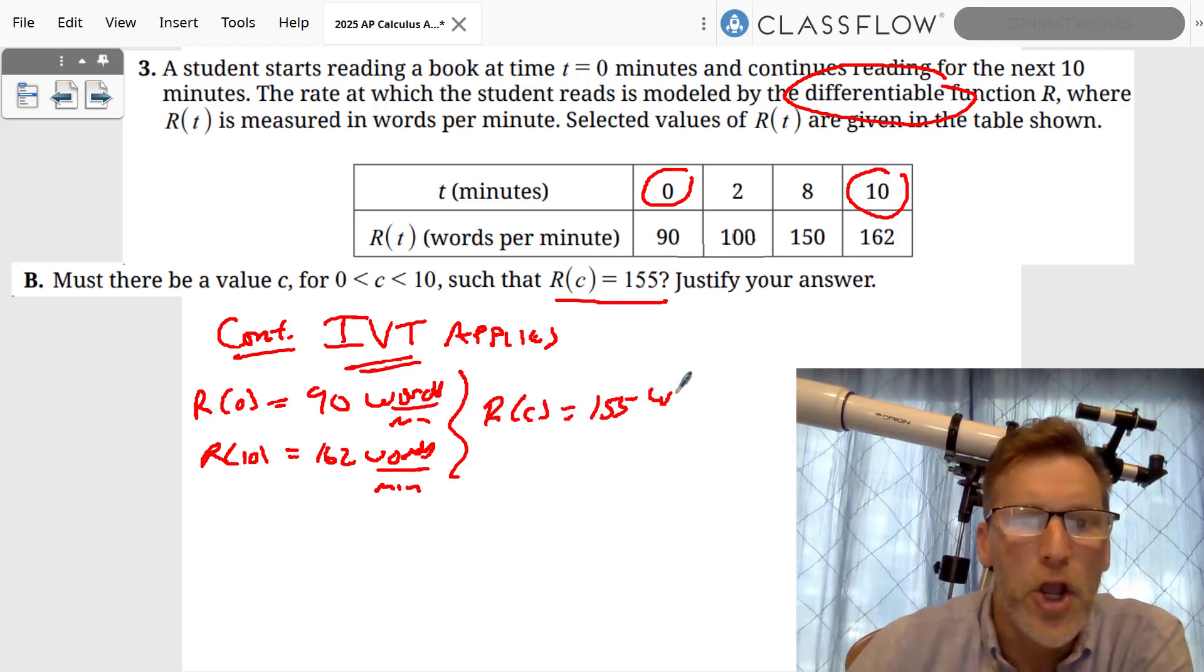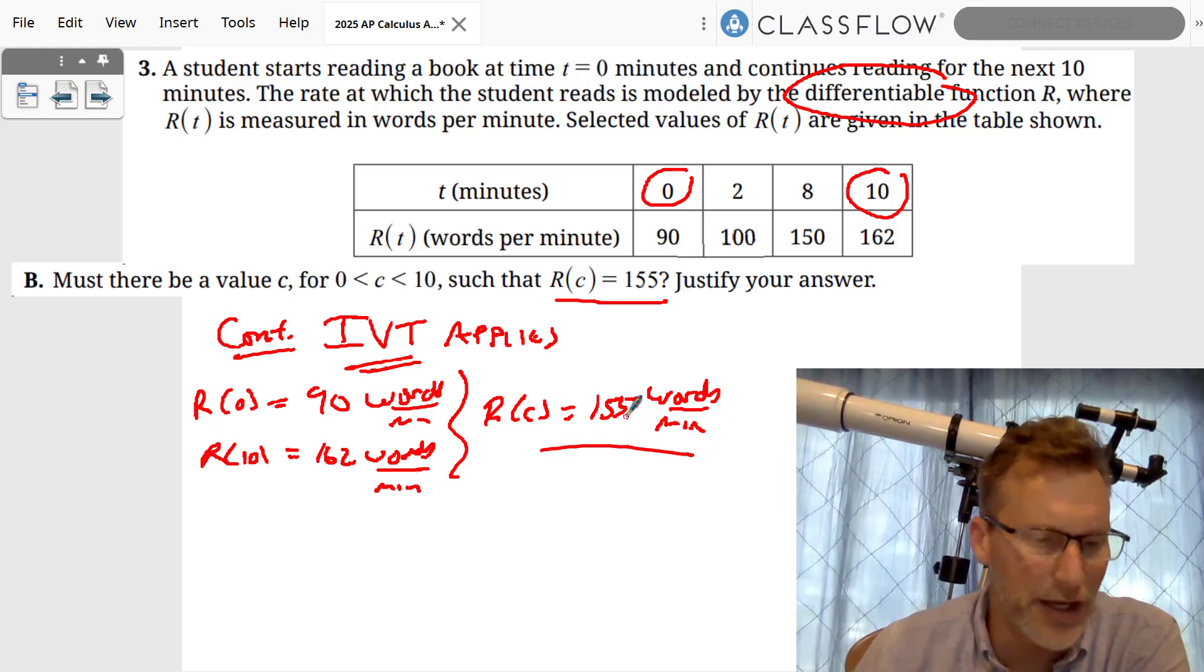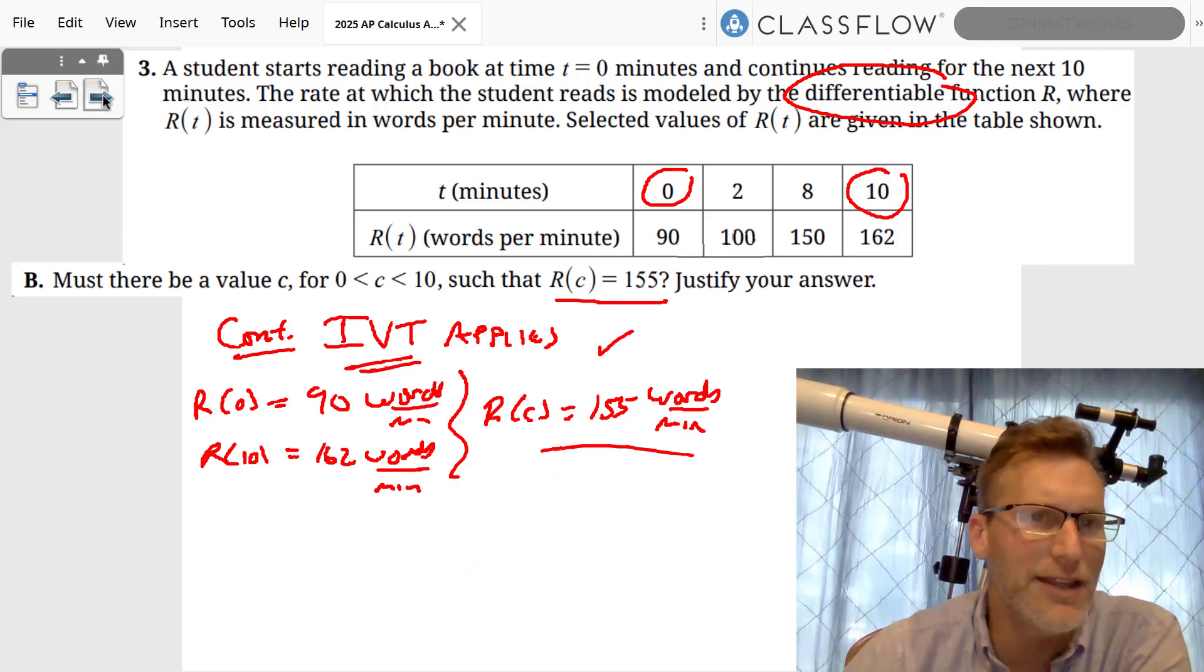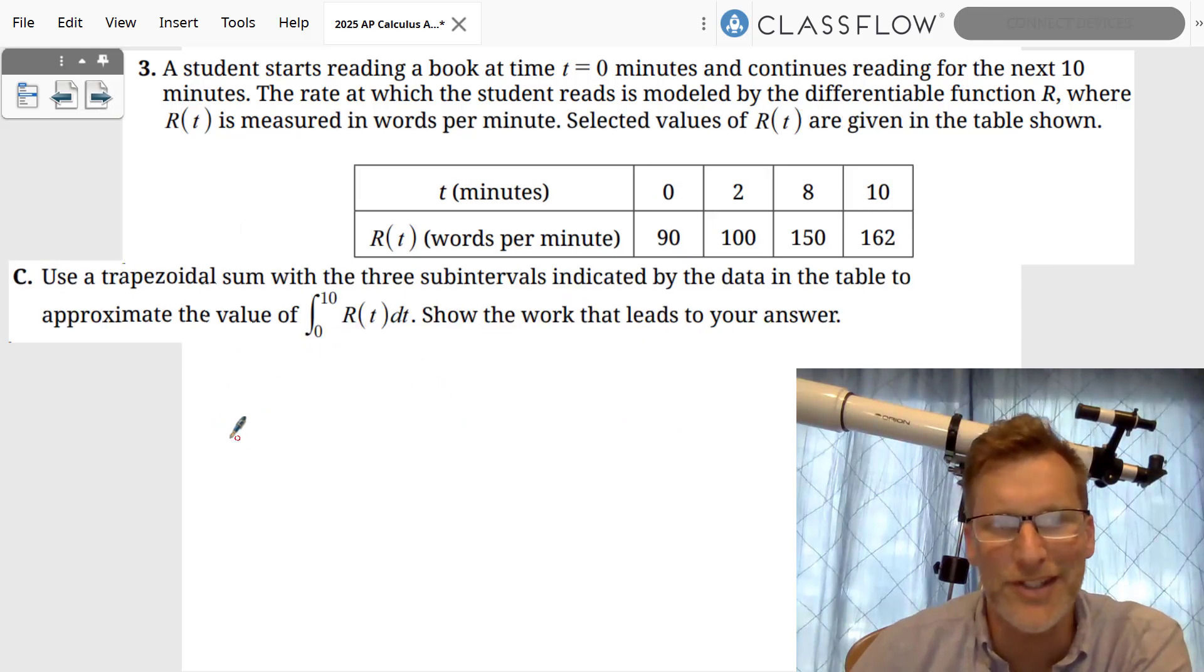Which means, is there a value c in between here at which r of c equals 155 words per minute? Why did the chicken cross the road? Because the Intermediate Value Theorem! It applies, it is correct. There must be a value c, and that is my justification.